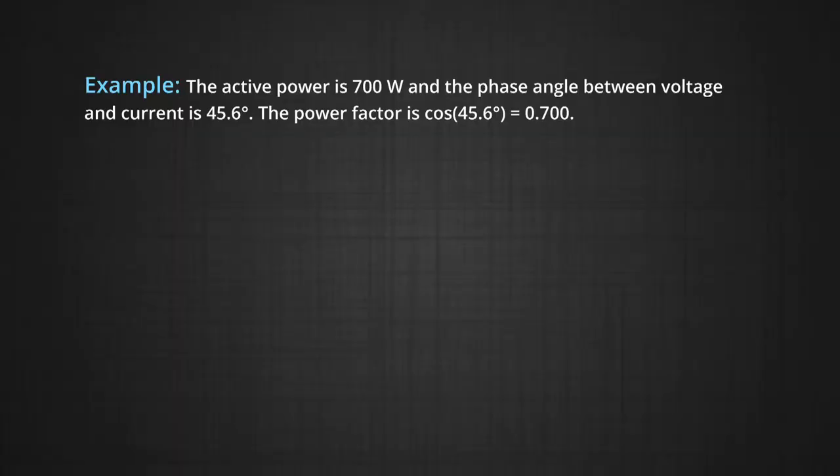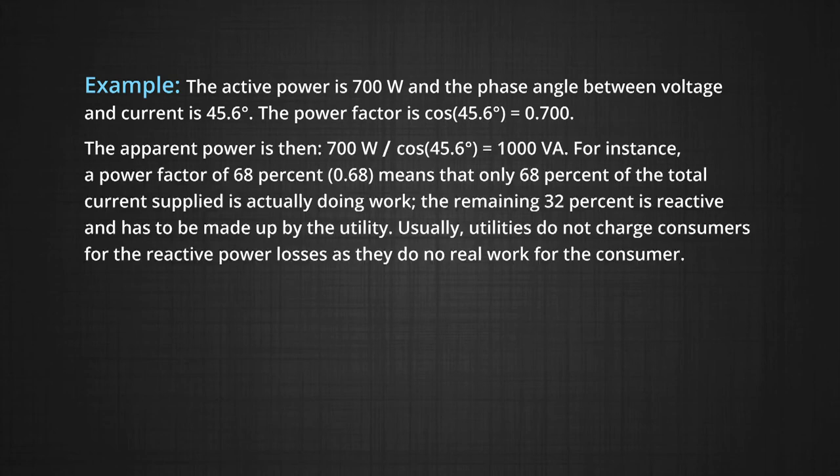Here we can take an example. Suppose the active power is 700 watt and the phase angle between voltage and current is 45.6 degrees. The power factor is cos 45.6 degrees. This value is nearly equal to 0.700. Therefore, the apparent power is then 700 watt divided by cos 45.6 degrees which comes around 1000 VA.